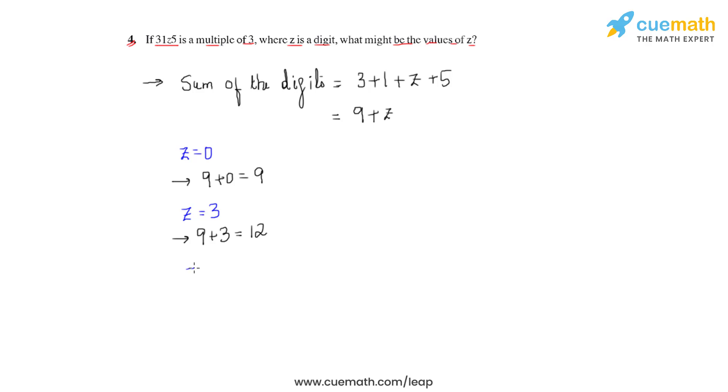The next value of z would be 6, for which the sum would become 9 plus 6 equals 15, which is again divisible by 3. Hence z equals 6 is also one of the values of z.